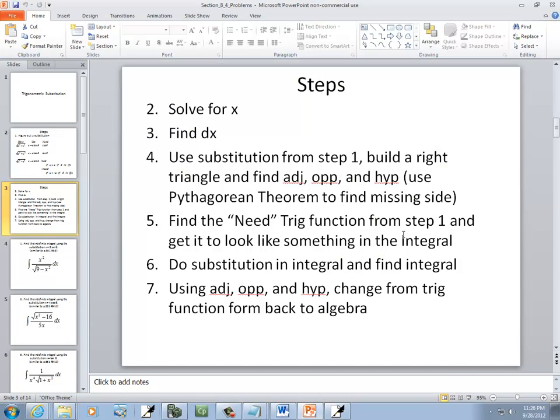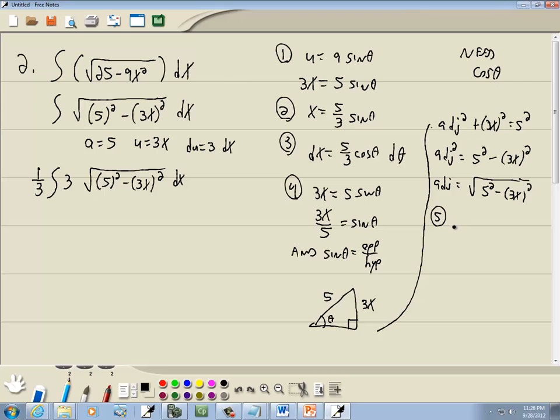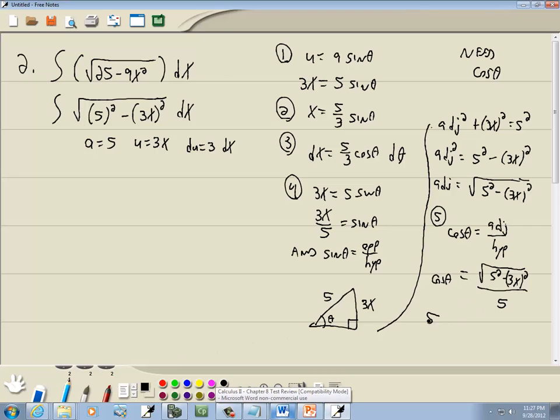Step 5, find the needed trig function from step 1 and get it to look like something in the integral. So we got cosine theta. Remember cosine is equal to adjacent over hypotenuse, so we got the square root of 5 squared minus 3x squared over our hypotenuse which is 5. If I multiply both sides by 5, I get 5 cosine theta is equal to the square root of 5 squared minus 3x squared.